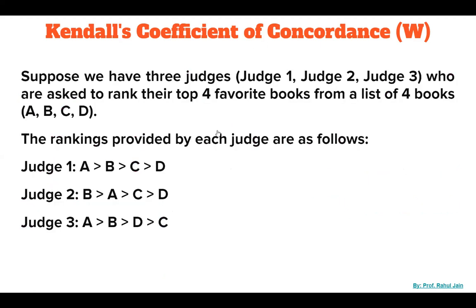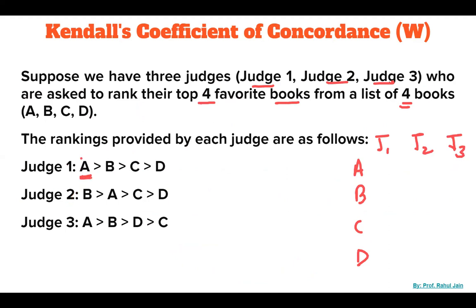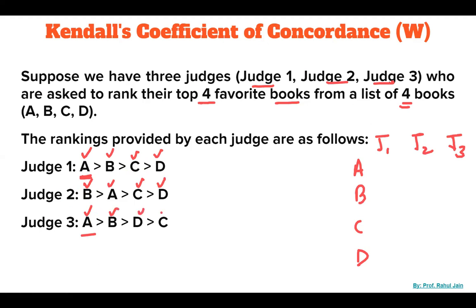Let's take an example. Suppose we have 3 judges — Judge 1, Judge 2, Judge 3 — who are asked to rank their top 4 favorite books from a list of 4 books: A, B, C, D. Judge 1 gives rank 1 to A, 2 to B, 3 to C, 4 to D. Judge 2 gives rank 1 to B, 2 to A, 3 to C, 4 to D. Judge 3 gives rank 1 to A, 2 to B, 3 to D, 4 to C.